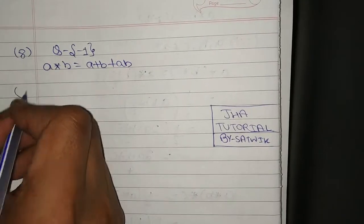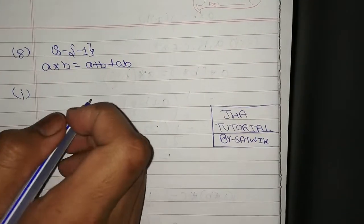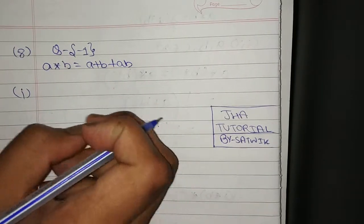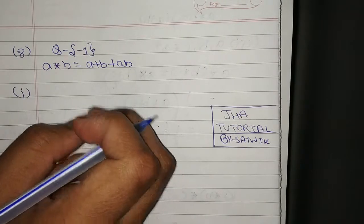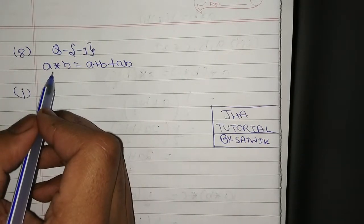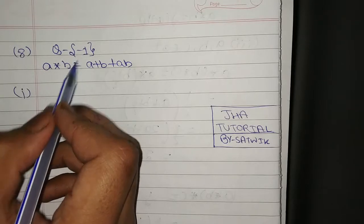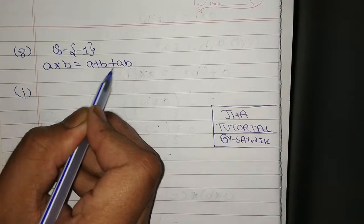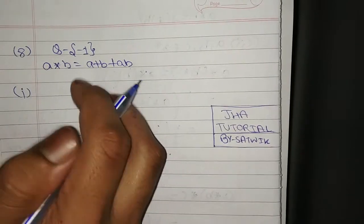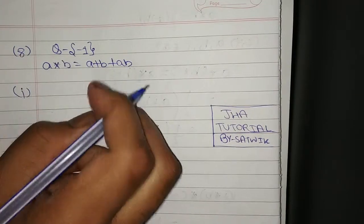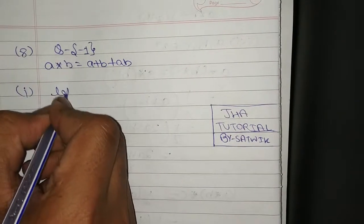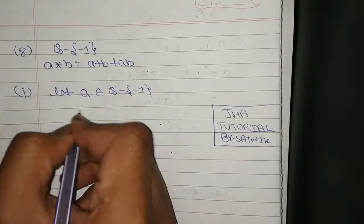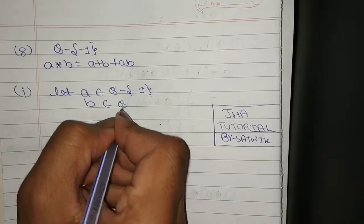To prove star is a binary operation on Q\ {-1}: if a and b belong to Q\ {-1}, then a+b+ab must also belong to Q\ {-1}. Let a, b belong to Q\ {-1}. We need to show a+b+ab belongs to Q\ {-1}, so that star is a binary operation.